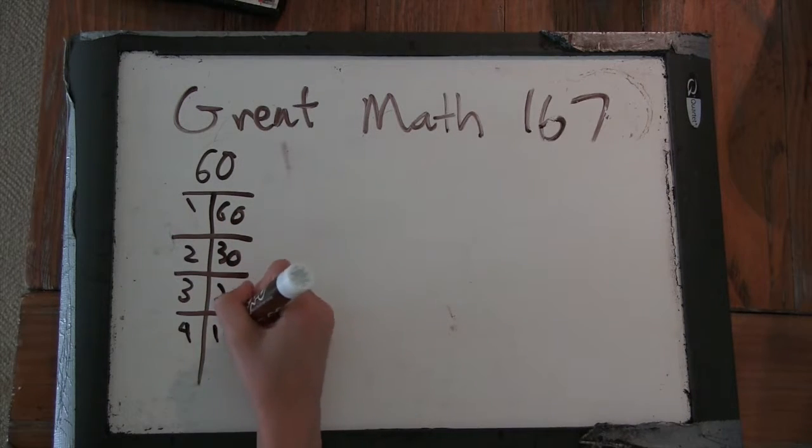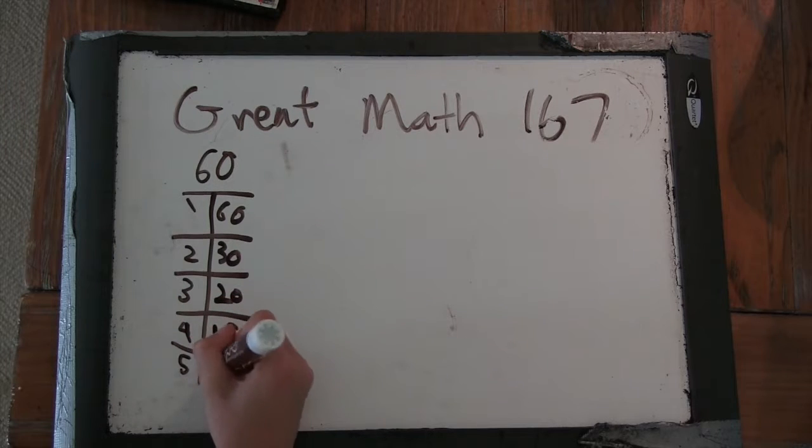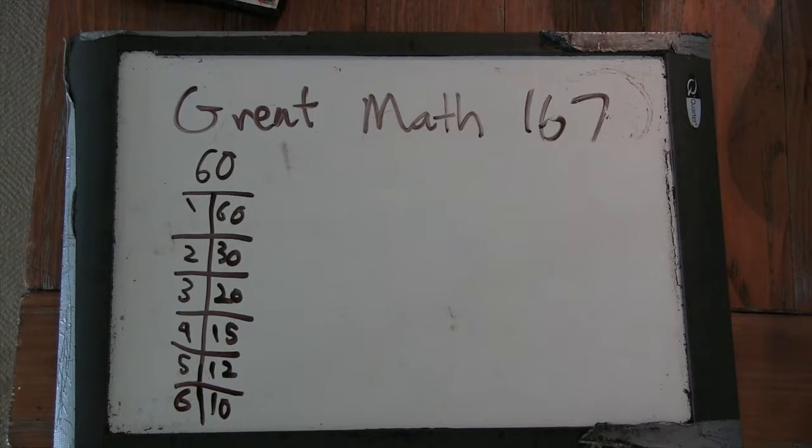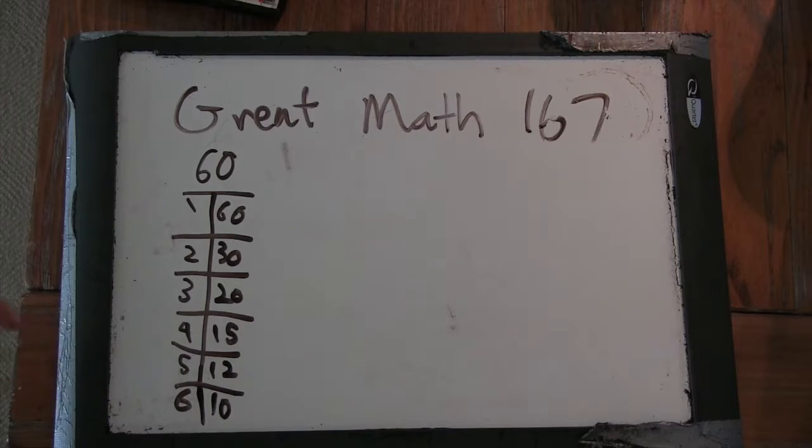4 and 15, 5 and 12, 6 and 10, not 7, not 8, not 9, so these are all the divisors.